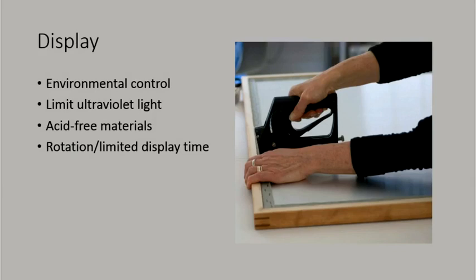The safe display of textiles depends on a variety of factors. Just like storage, control of the temperature and relative humidity of the environment is important. Limiting light exposure is also essential, especially for silk, as degradation is cumulative and irreversible. Silk textiles should be placed in areas with no ultraviolet light exposure and low ambient light if possible. While 50 lux or foot-candle lighting is considered standard for most textile display, recent studies indicate that even lower light levels are better for silk as it is so reactive to light. Ultraviolet filtering glazing is recommended for framed pieces, and ultraviolet filtering window shades are commercially available to protect entire rooms.